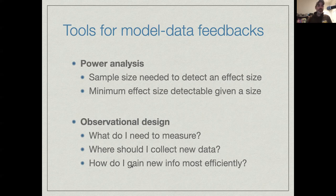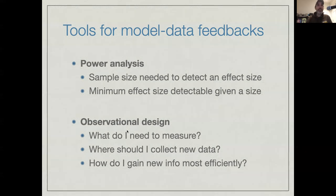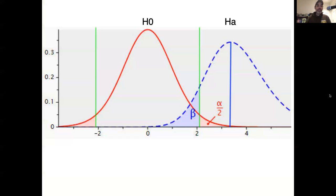Building on this in a more complex way, we can think about observational design studies that help us better identify what we need to measure, where we need to measure it, and how we gain this new insight most efficiently. This builds on the idea of power analysis to do a higher-level analysis, often dealing with designing whole networks or sensors — the sort of thing that happens when deploying a sensor network or designing a new sensor to understand what the design constraints are.